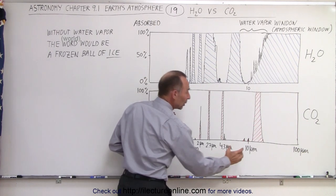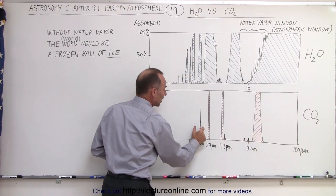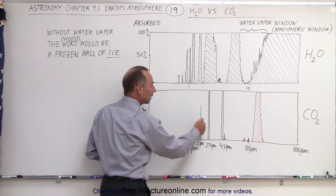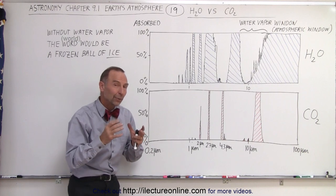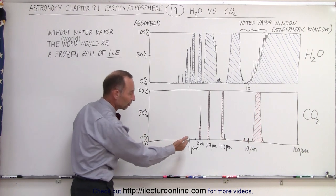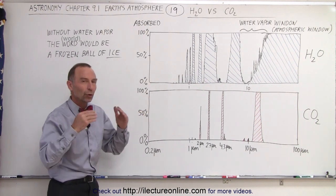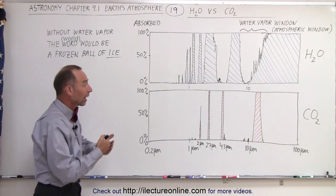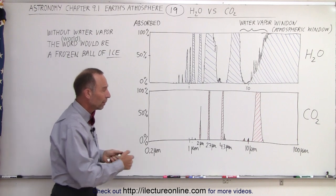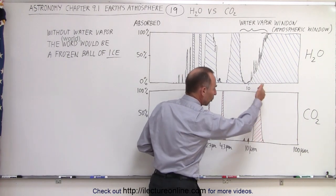Basically the only two that really matter is this big one right here and this one right here. Now this one is relatively small and it does absorb some of the radiation that comes from the sun because it falls in the 2 micrometer range, which is already part of the sun's blackbody radiation curve.